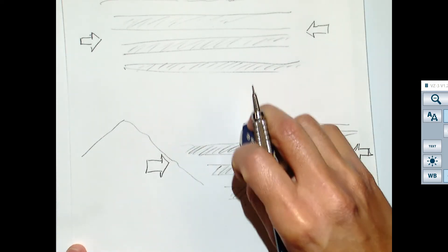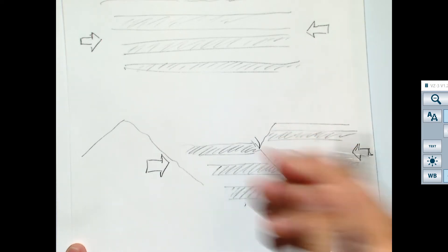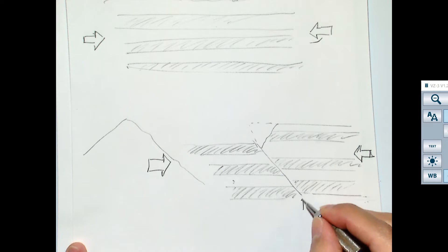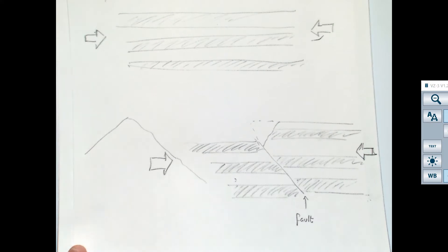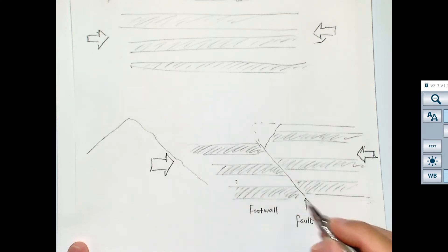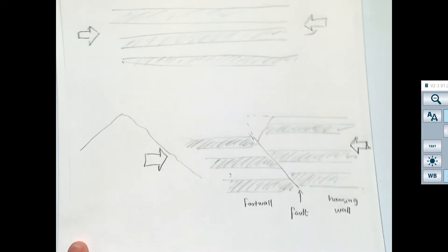If millions of years pass by, you're also going to have some erosion, and probably after a long time you'll have a river there — you won't see the part that was there before, but it was there, eroded away. That plane is going to be a fault — it's a shear fracture. Whatever is below the fault is called the foot wall, and whatever is above the fault is called the hanging wall. That's a typical convention in structural geology.